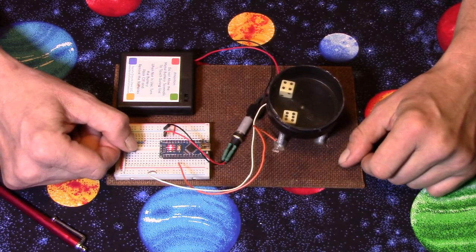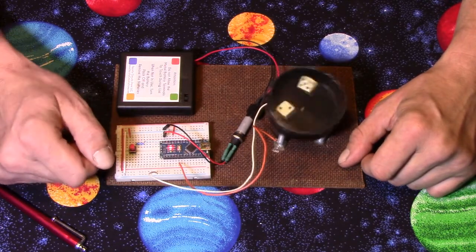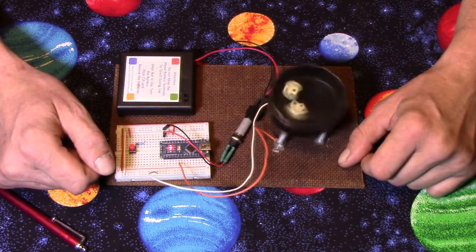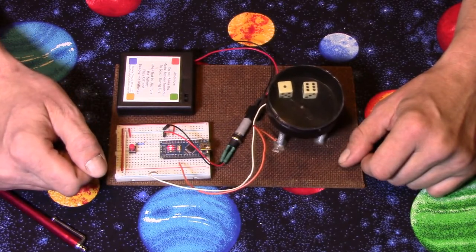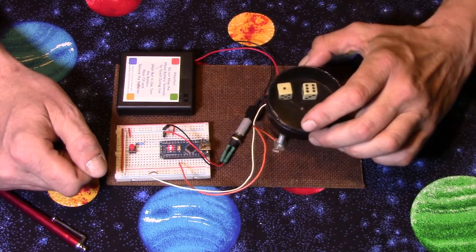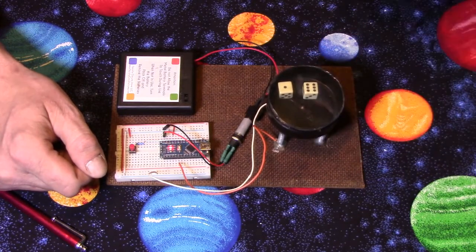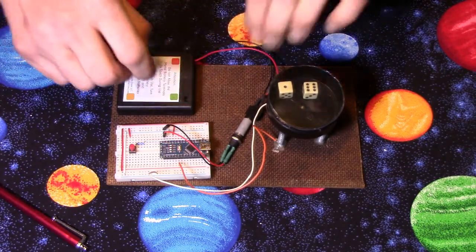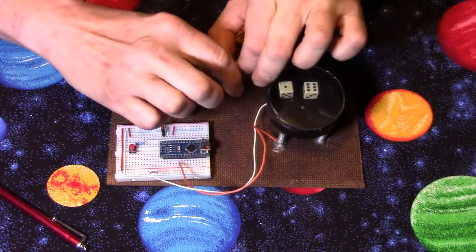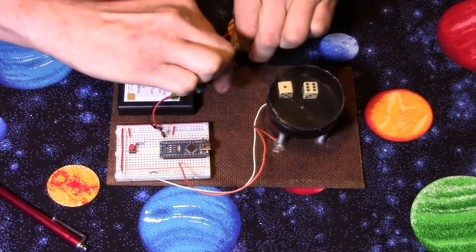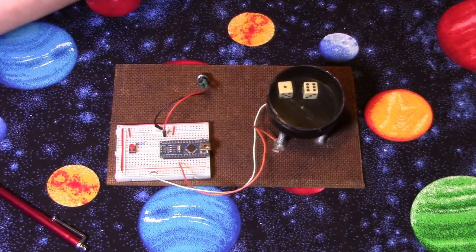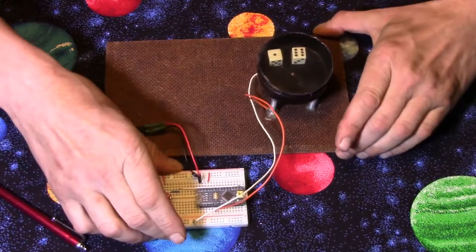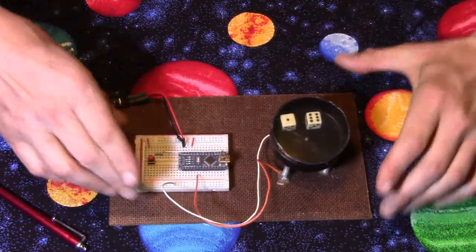We'll try it one more time and then we'll take a look at how it's built. There you go. Now you can change the duration of how long it shakes, and I'll show you that when we get to the sketch. But let's take a look at how this is built. First I'm going to get the battery pack out of the way because we're not going to need that.